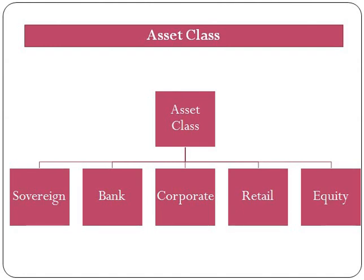There are five broad asset classes under the internal rating-based approach which are used for reporting purposes, and these are corporate, sovereign, bank, retail, and equity. But here we will look at nine asset classes which are given under the standardized approach, and in our next video we will cover those five asset classes given under the IRB approach.